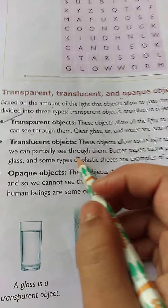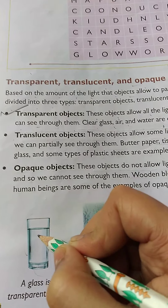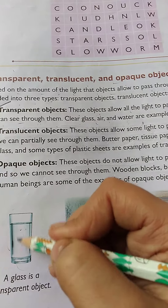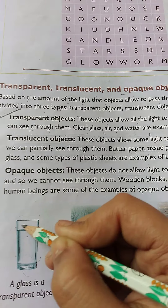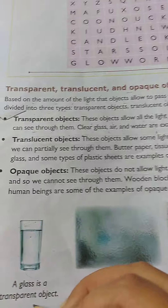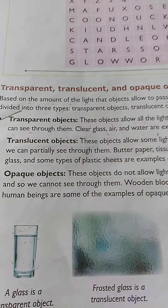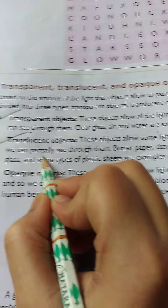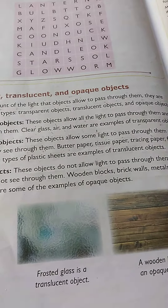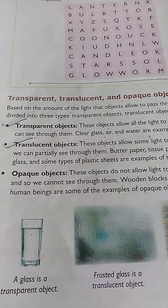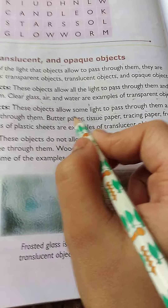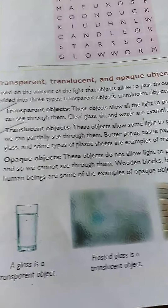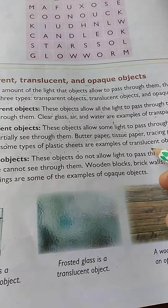You can see here: a clear glass is a transparent object, water is also a transparent object, and air is also a transparent object. Translucent objects allow only some light to pass through them and we can partially see through them. Examples are butter paper, tissue paper, tracing paper, frosted glass, and some types of plastic sheets.